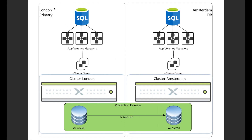In my lab environment I've prepared two sites: one called London and one called Amsterdam, which is the disaster recovery location. I've created a container called 'writable app full' on both sides, and I need to create a protection domain that will take care of the synchronization.